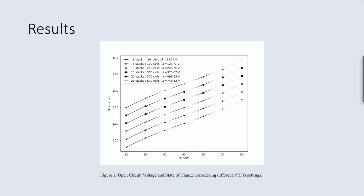In the results section, the state of charge can be determined using the mathematical equation described in previous sections, as shown in Figure 2, by knowing the open circuit voltage of the vanadium redox flow battery and the stack configuration. The open circuit voltage state of charge curves in Figure 2 are based on different stack configurations, and the axes represent open circuit voltage minus lambda, where lambda is a representative value selected based on the stack configuration. The addition of cells in the stack increases the potential and raises the open circuit voltage values. The state of charge is calculated between 20% and 80%, since this is the recommended range to avoid capacity loss. Figure 2 is a dynamic graph that can be used to understand the relationship and calculate the state of charge.